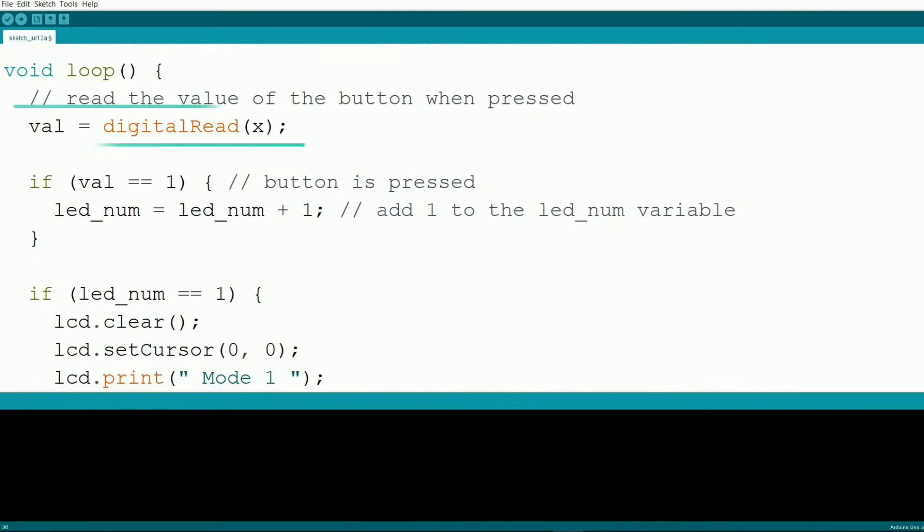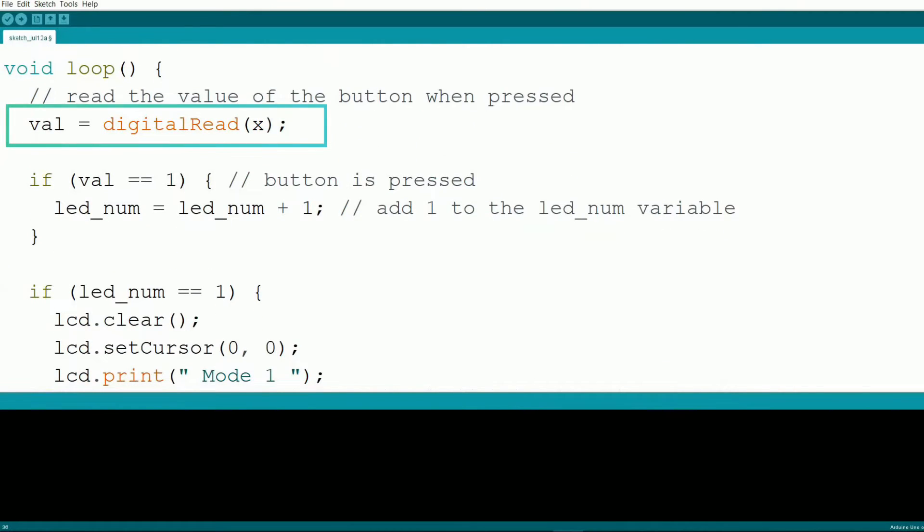The loop function reads the button state with digitalRead. If the button is pressed, we increment the led_num variable to cycle through the menu options. Here's an important part of the code. When the button is pressed, digitalRead will return a value of 1. This condition checks if the button is pressed. If true, we increment the led_num variable by 1. This variable keeps track of the current menu mode. Every button press advances led_num to the next mode.